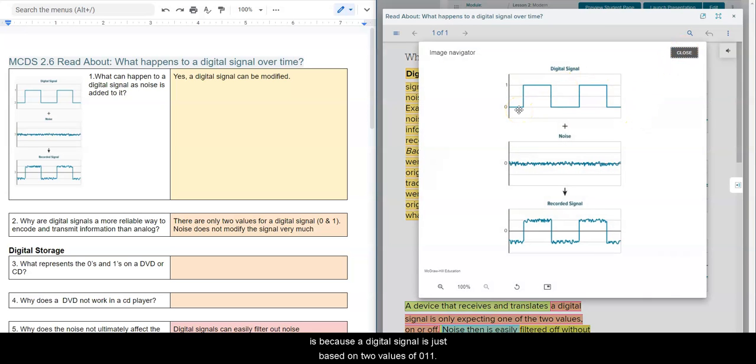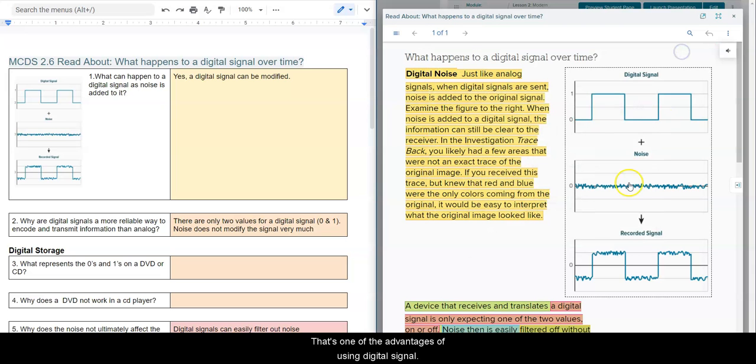Because a digital signal is just based on two values of 0 and 1. And even though we have background noise, it's still very easy to see. This is a 0, this is a 1, this is a 0, this is a 1, this is a 0. So that's one of the advantages of using digital signals.